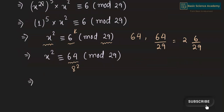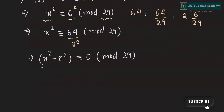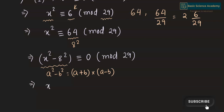Hence, we can write this equation as x squared minus 8 squared is congruent to 0 mod 29. This is in the form of a squared minus b squared, which equals a plus b multiplied by a minus b. Now the equation becomes x plus 8 multiplied by x minus 8 is congruent to 0 mod 29.